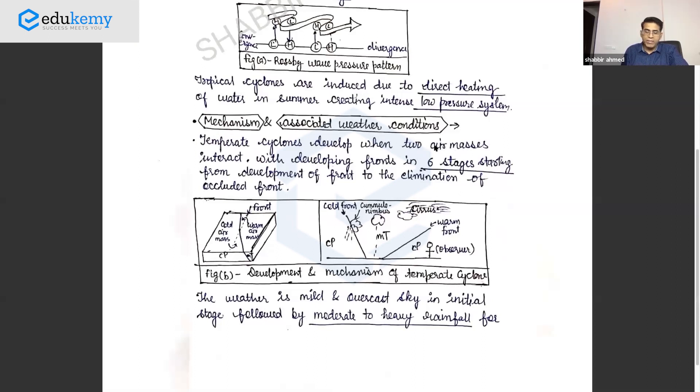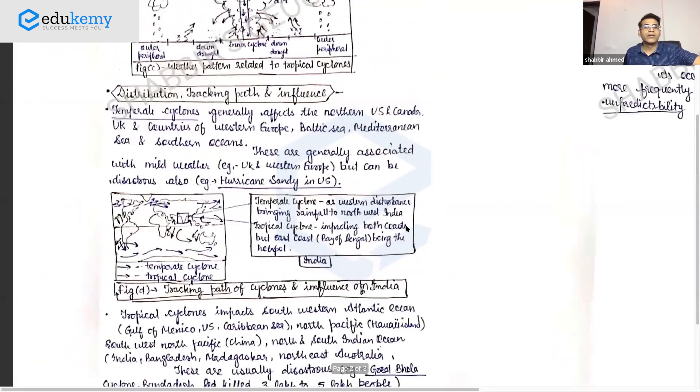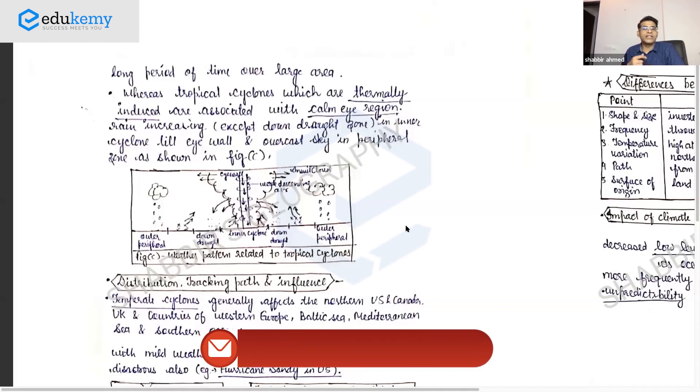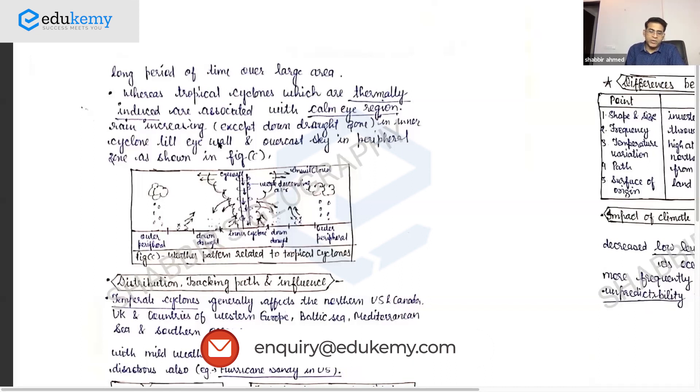You've compared the mechanism and weather associated. Temperate cyclones: two air masses interact in six stages from development to elimination of the front or occlusion. Include a diagram. The weather is mild overcast sky initially followed by moderate to heavy rainfall, then decay. Whereas tropical cyclones are thermally induced, have a calm eye region, a downdraft region, and eyewall region. Use keywords, show overcast sky, and have a diagram showing the parts - outer periphery, downdraft zone, inner cyclone, eyewall.